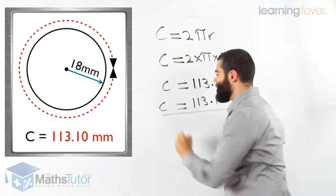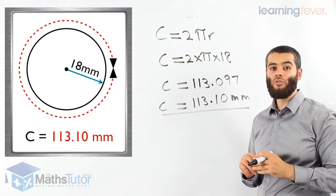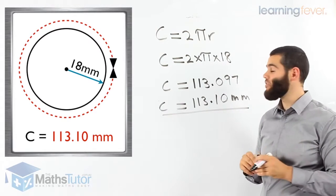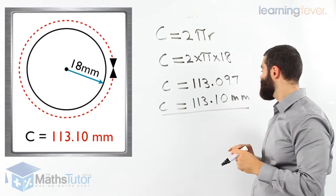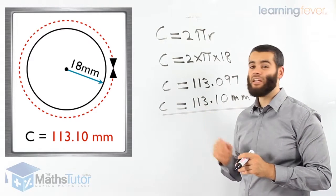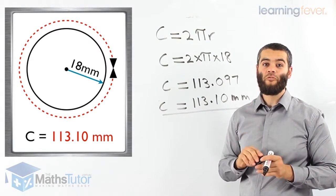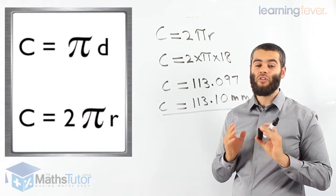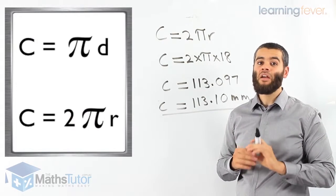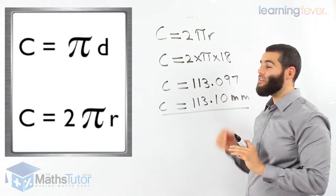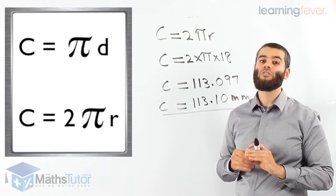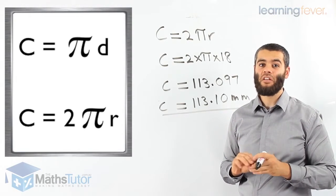So our answer — the total circumference, the total surrounding, the total perimeter of this circle — is 113.10 millimetres. This is basic, it's very easy. Remember the formulas. I always tell students: if you know the formulas, you'll never go wrong. If you want to memorise them, write them down maybe 30 to 40 times, and by the end you'll have memorised these formulas. There are so many formulas in mathematics — it's very important to know every single one.